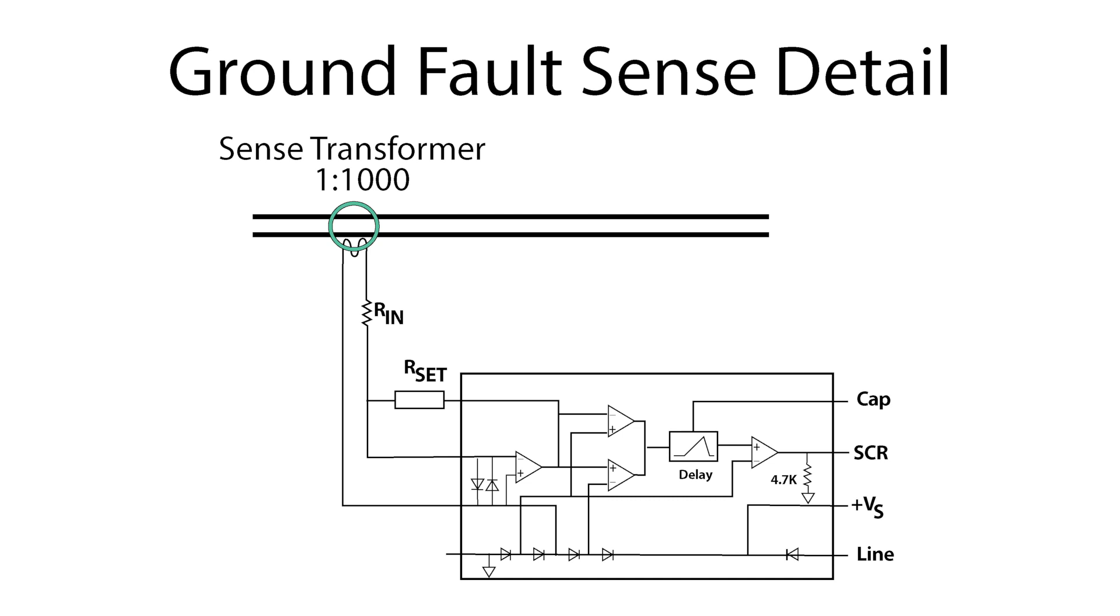When the current from the sense toroid exceeds a preset level, the window detector output starts a delay circuit. If the sense circuit exceeds the trip current for a time longer than the preset delay interval, the chip triggers the SCR.